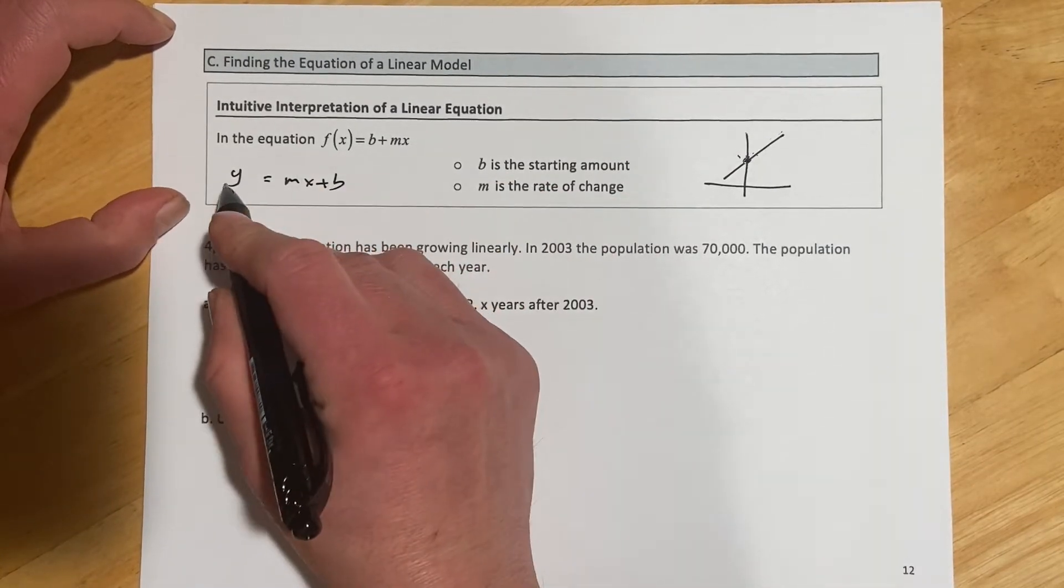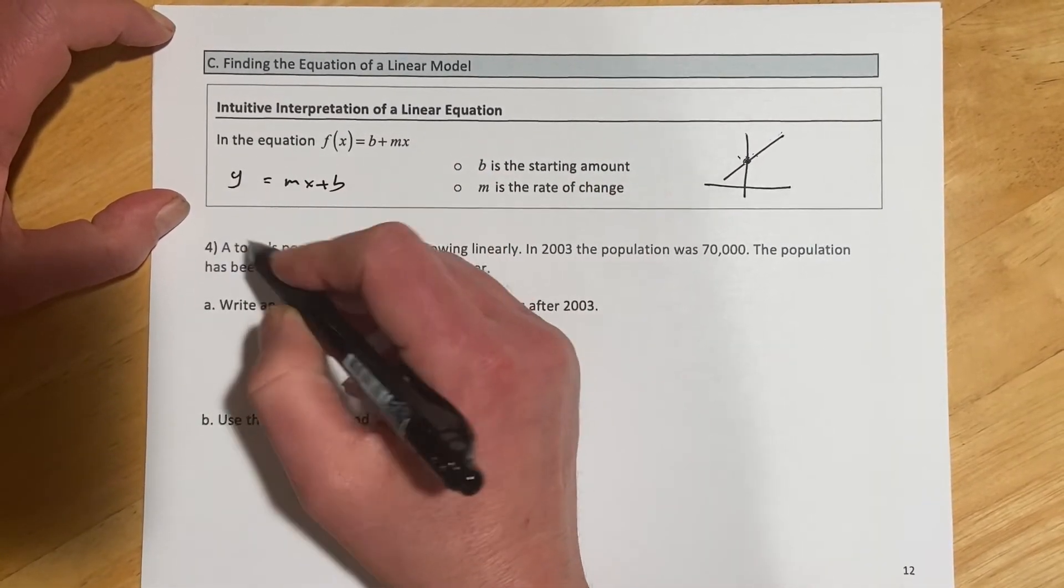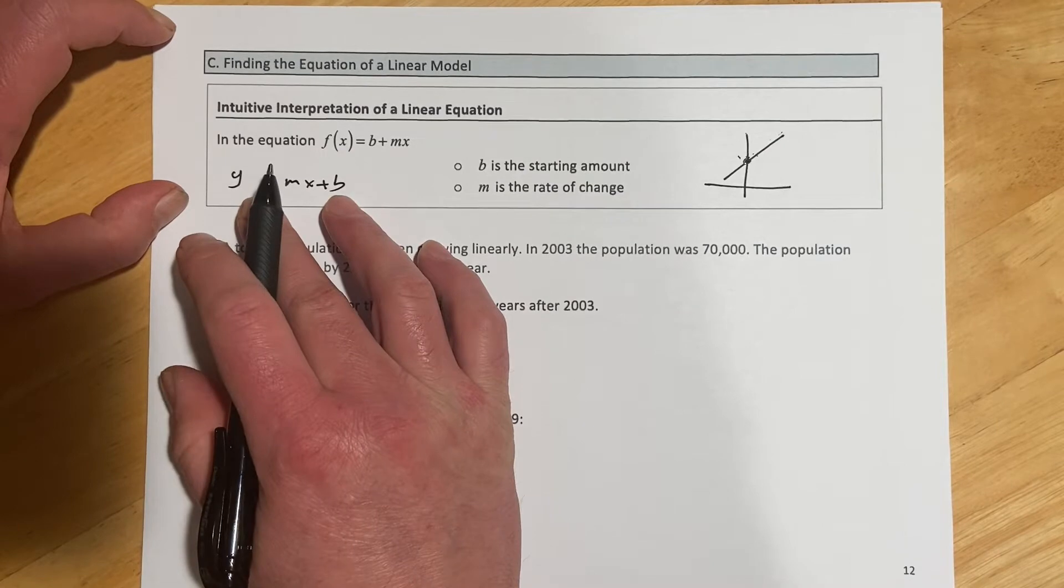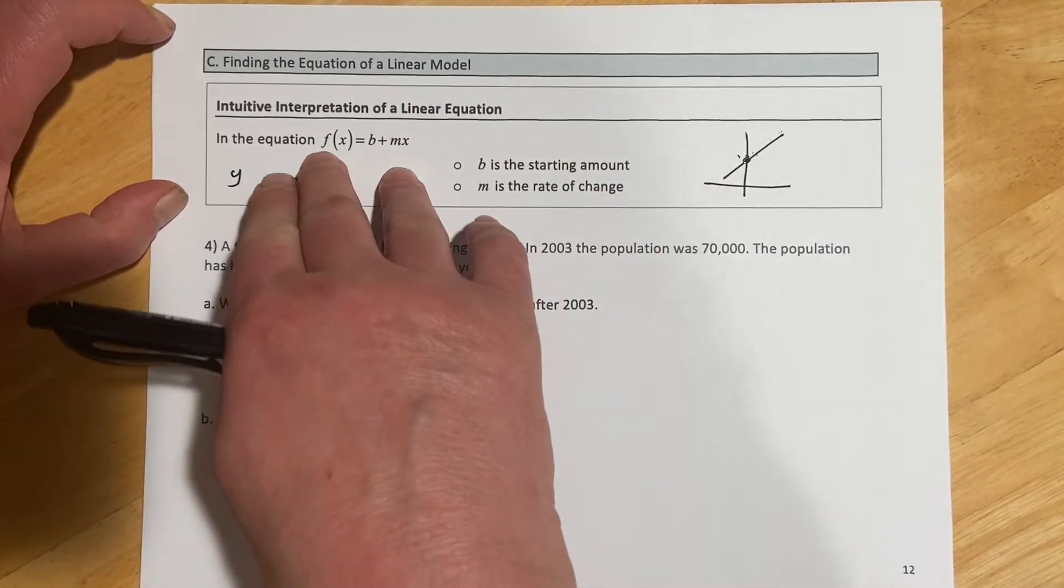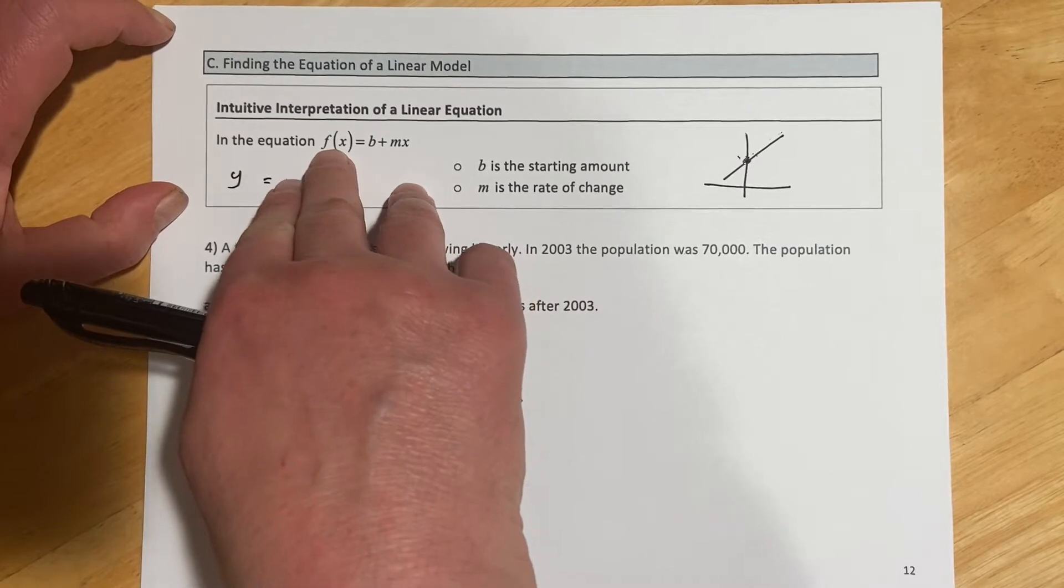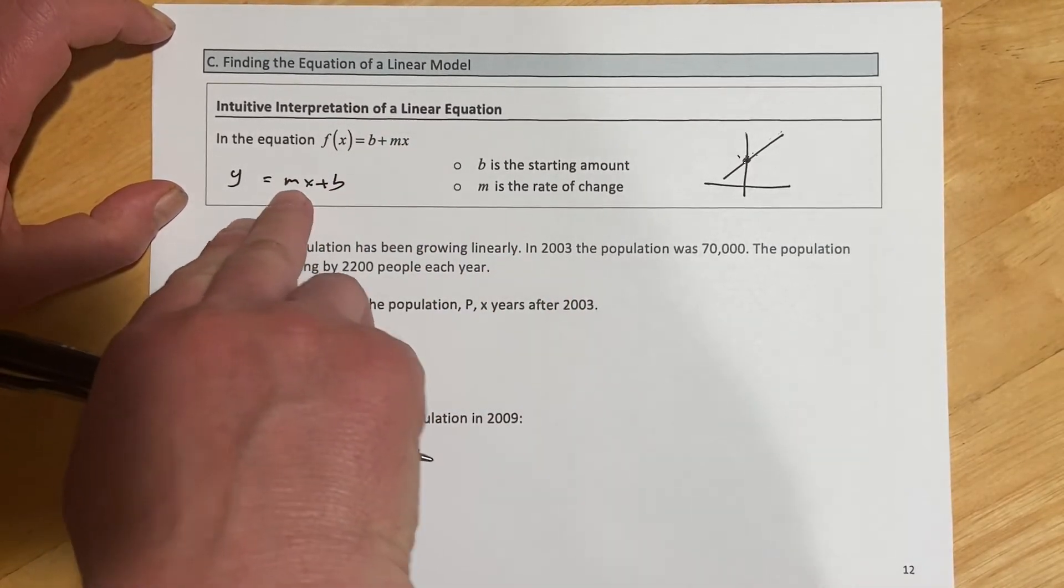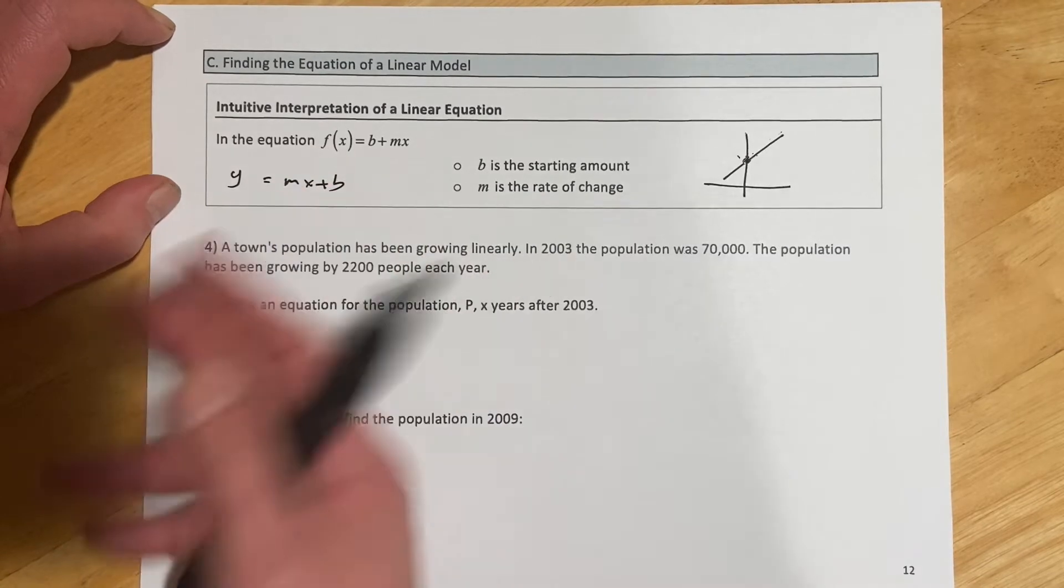So here we have y equals mx plus b. You might remember that from a previous class. That's our slope-intercept form. In this section, it's being written a little bit differently. We're using function notation, f of x, and then b plus mx, which is the exact same thing as mx plus b, just written backwards.